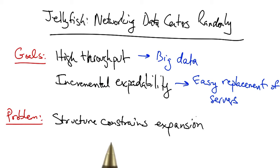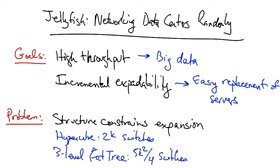Unfortunately, the structure of data center networks constrains expansion. Structures such as a hypercube require 2 to the k switches, where k is the number of servers. Even more efficient topologies, like a fat tree, are still quadratic in the number of servers.